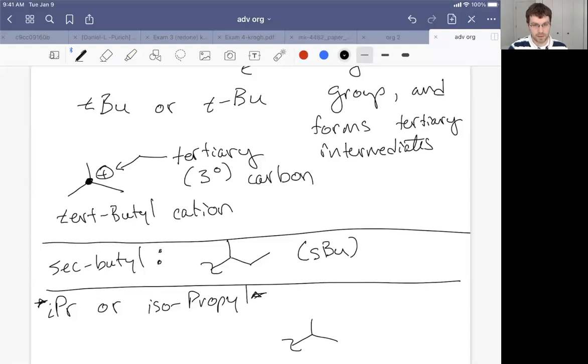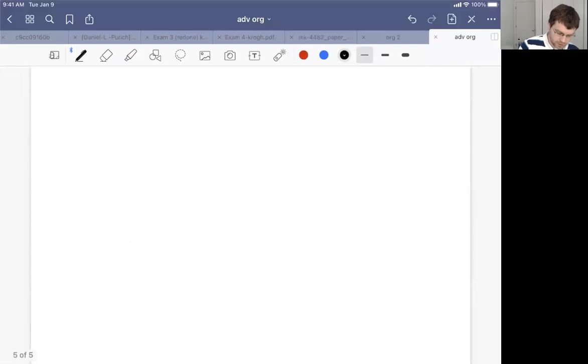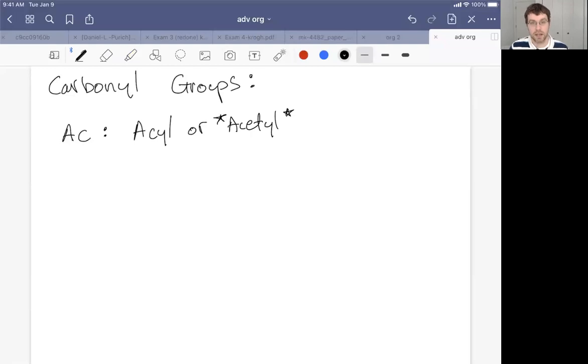Those are our alkyl groups. Some other groups that we will want to at least be aware of are carbonyl containing functional groups. Carbonyl groups are Ac. This is for acetyl or acyl. This one's unfortunate in that it's very common. It does technically apply to two different groups, but acetyl is the primary one. So acetyl is a bit generic. What that's saying is we've got a carbonyl with some R group attached to it. Acetyl is specific for R equals methyl. This is the one that we use quite frequently. If you see acetyl, I would often think of it as acetyl.